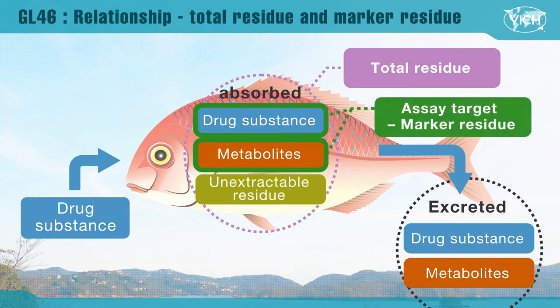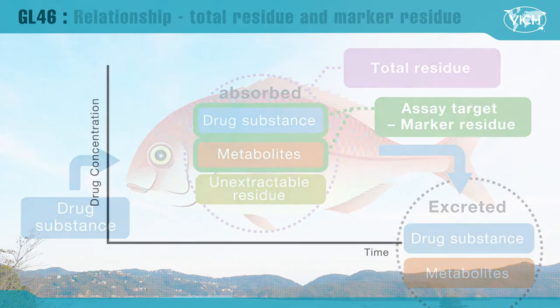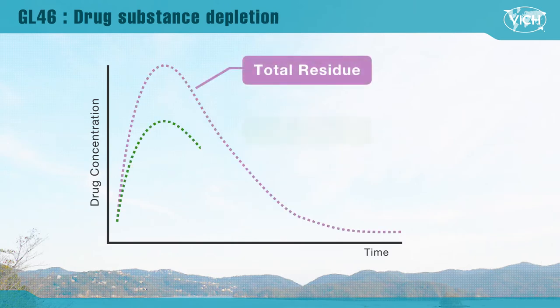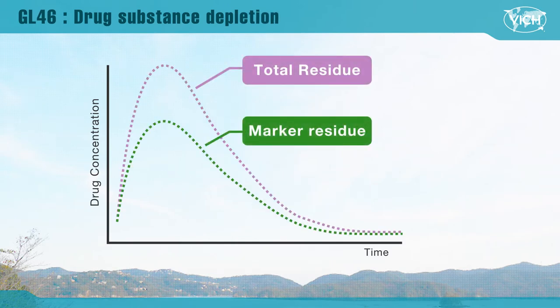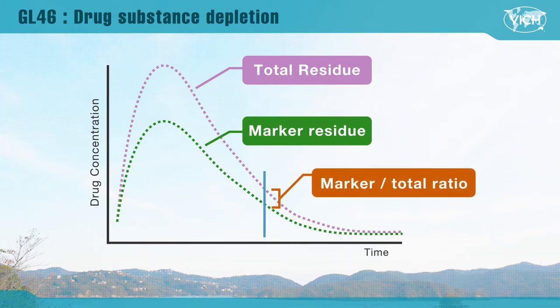This substance is called the marker substance. In addition, major metabolites greater than 10% of total residues should be identified. GL46 is designed to identify a marker compound, examine the total residue kinetics, and the marker and total residue relationship. The total residue depletion and marker residue depletion are measured to determine the marker-to-total residue ratio, especially at the point of withdrawal. This study is also used to identify the target tissue for residue monitoring.